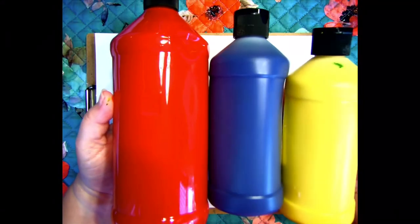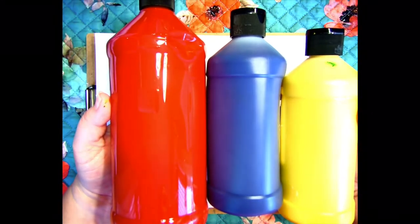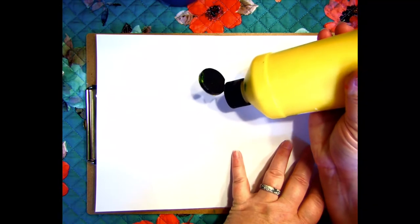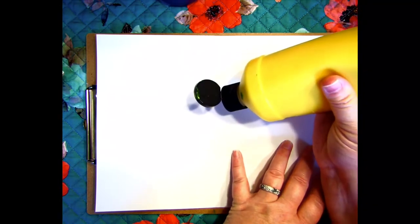I start by folding my paper in half. For paint colors, I chose to use only the primary colors. The primary colors are blue, yellow, and red. Those three colors are used to make every color in the rainbow. When they mix during this project, we will not have to worry about getting muddy colors.